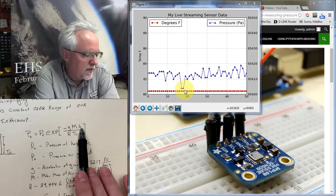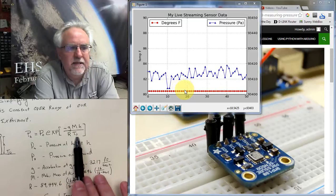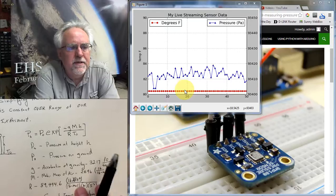minus G times M times H divided by R divided by T0. What are these numbers?